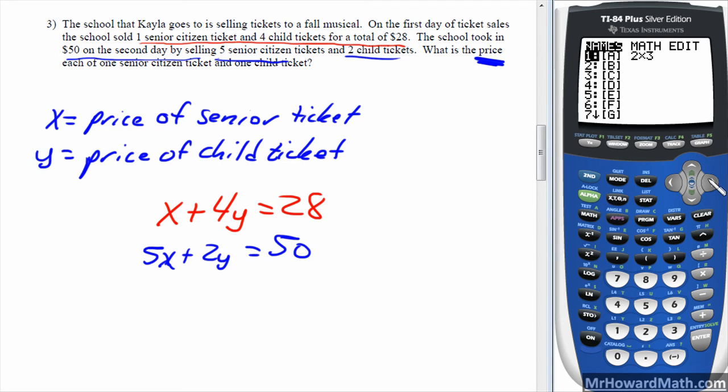So there's our two equations. Let's go into matrix, second matrix, over to edit. And first row is one, four, and $28. Next row is five, two, and $50. So check it. One, four, $28. That's an implied one there. Four there, $28 there. Check. Five here, $2, 50. Five, $2, 50. Yes, that's all correct.